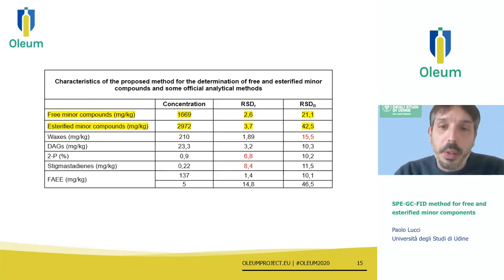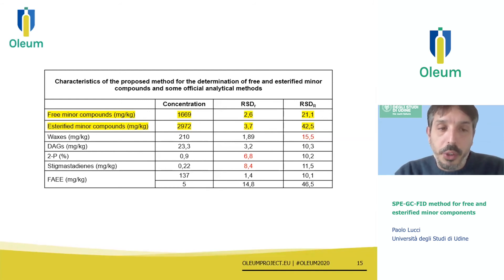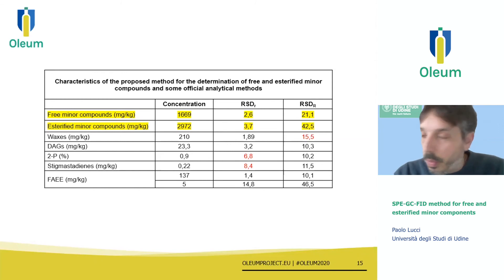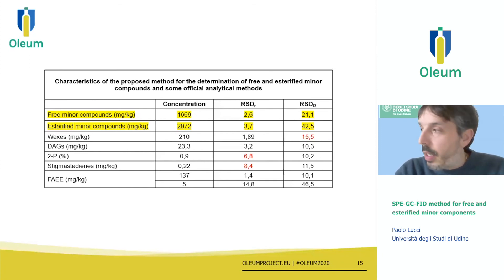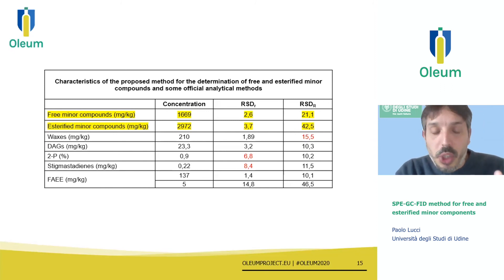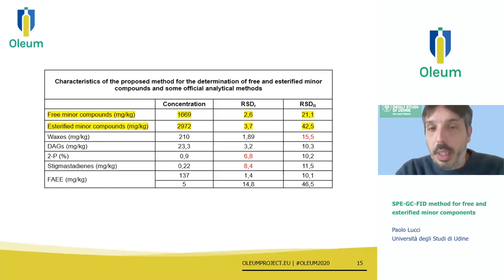This table makes a comparison of the repeatability and reproducibility obtained for free and esterified compounds compared to other official methods. It is true that we cannot directly compare these methods because we are measuring different molecules with different procedures at different concentrations, but just to give an idea, the repeatability was not poor. Even the reproducibility, at least for the free minor compounds, is quite close to that obtained with other methods at lower concentrations. If a higher number of participants had correctly followed the SOP, the method would probably have led to better reproducibility.